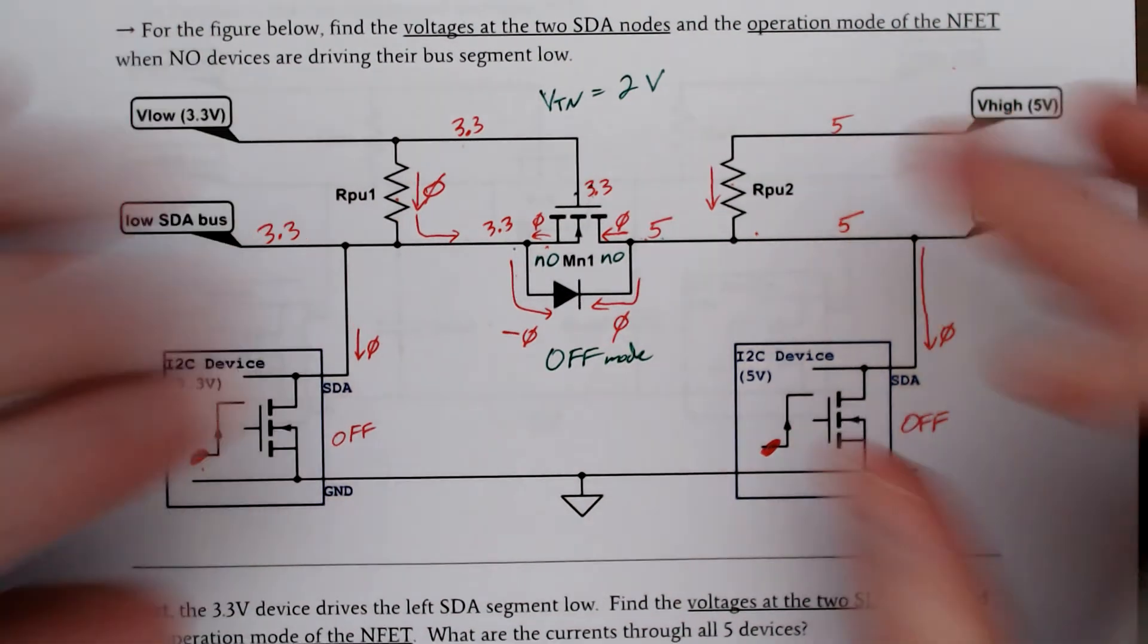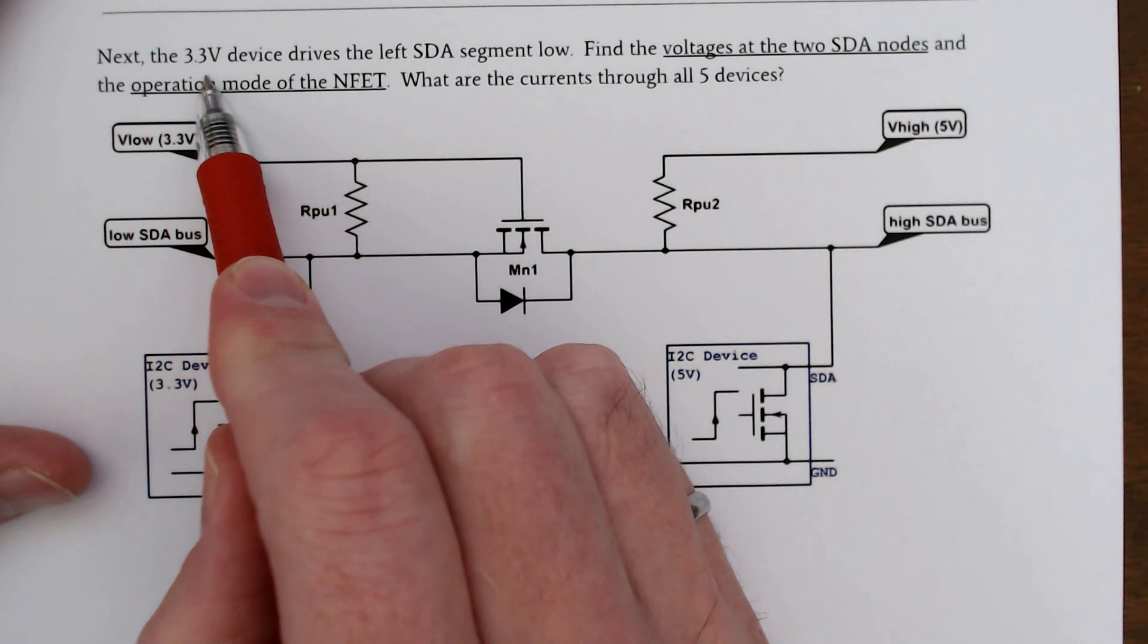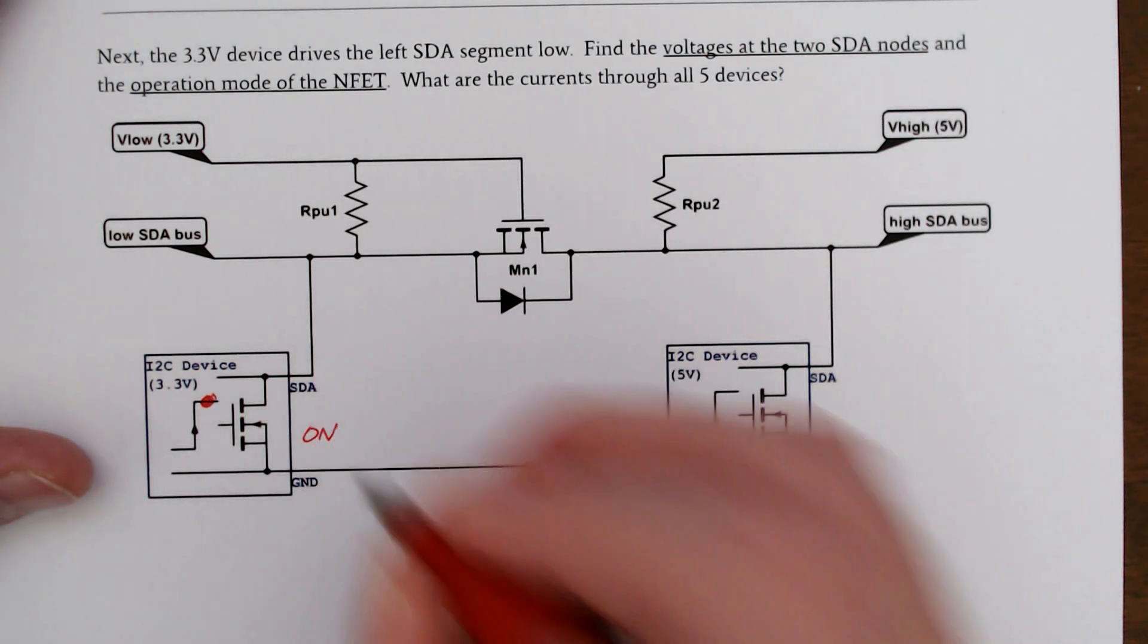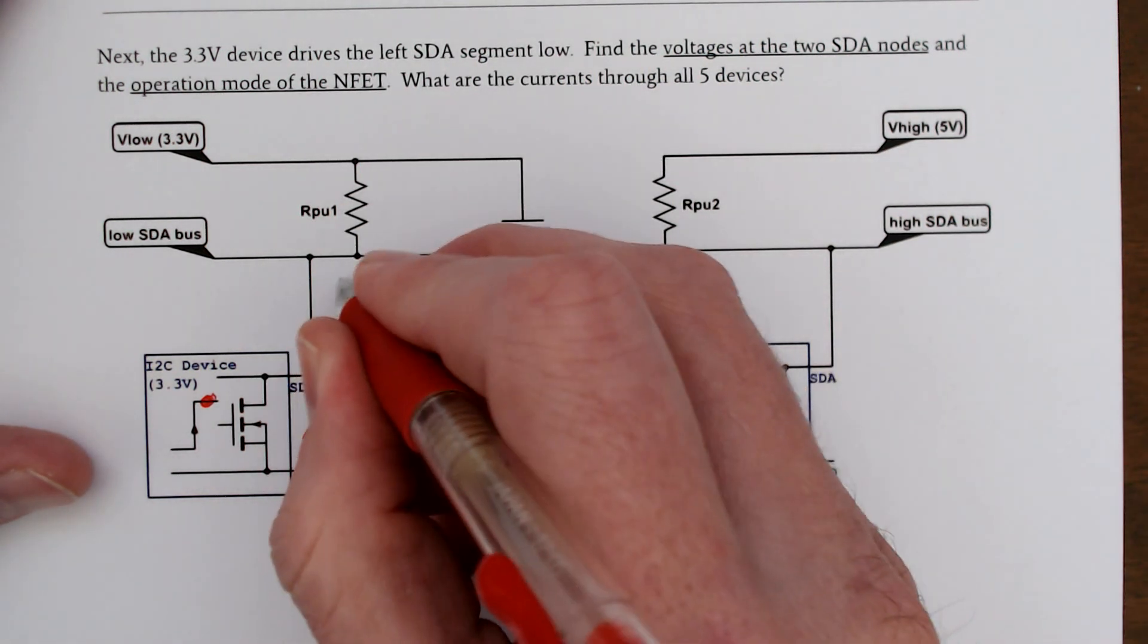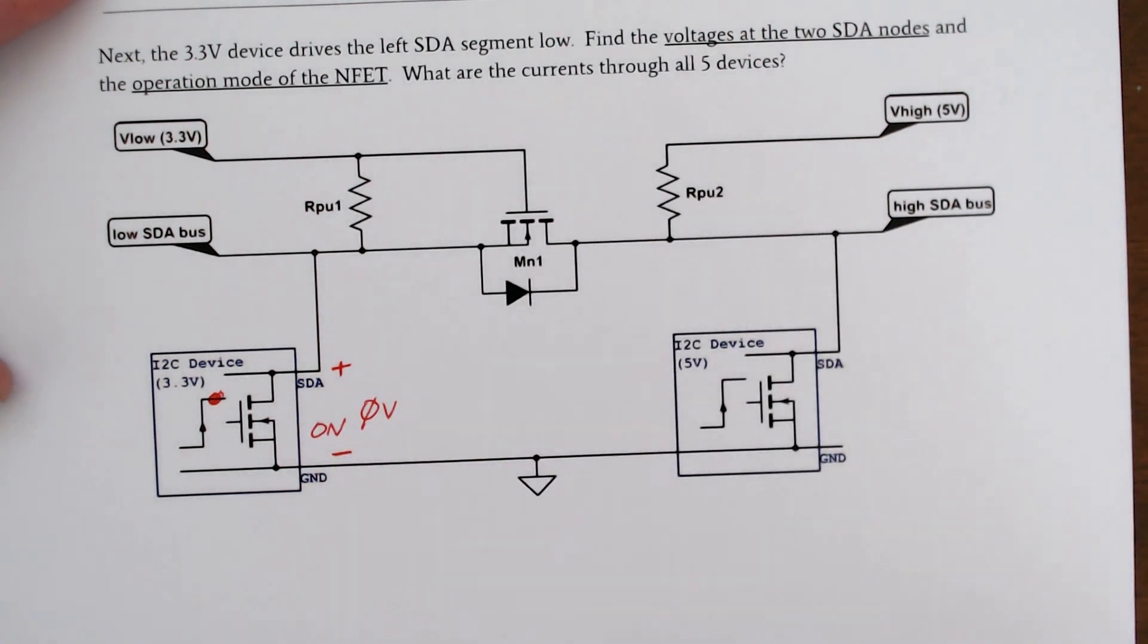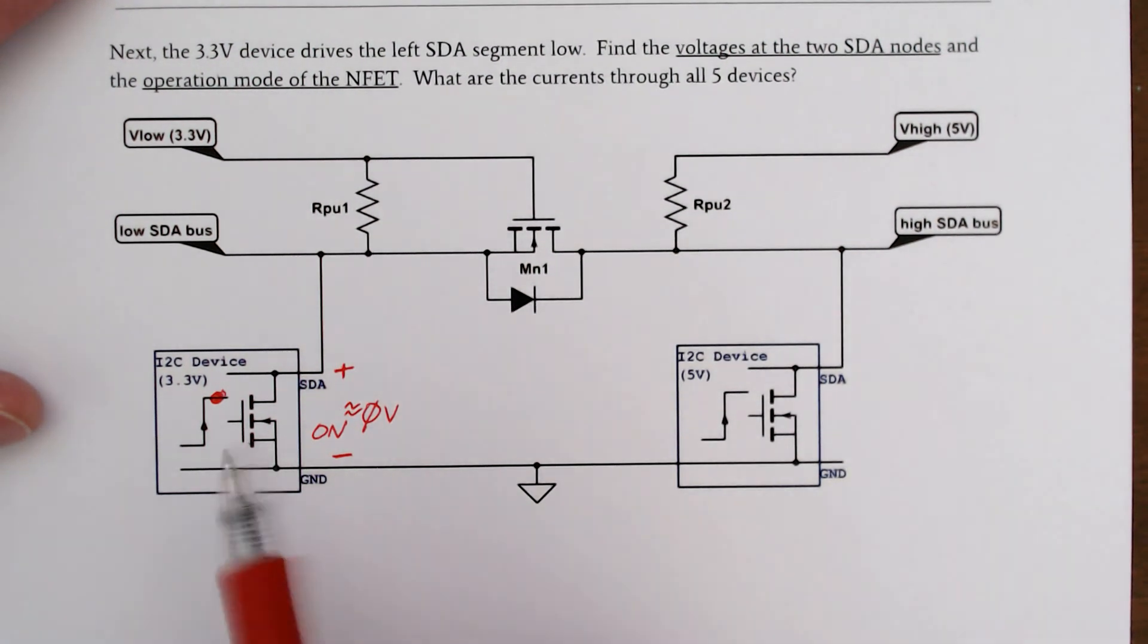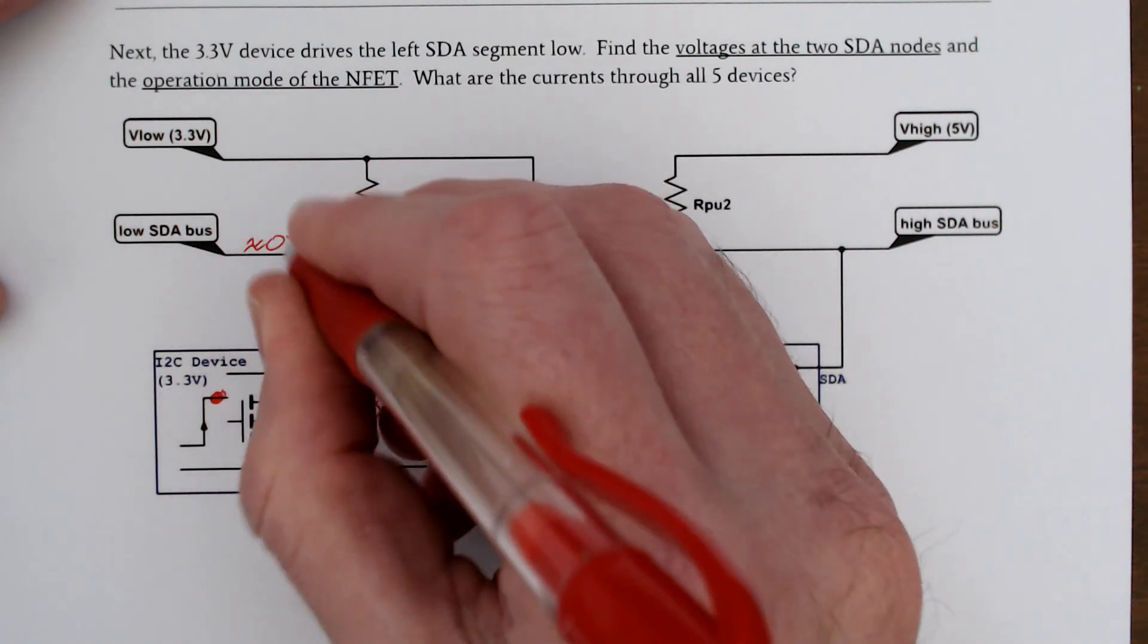All right, the next thing we're going to do is take this state, then we're going to turn on the 3.3 volt device, drive the left SDA segment low. What happens is now we're going to drive our gate voltage high, turn this one on, either triode or saturation mode, and eventually we're going to have some current that flows. I will just say that this is a really nice MOSFET and we'll say that this is about zero volts. This is a nice switch and it's on.